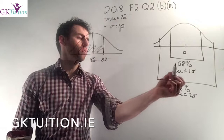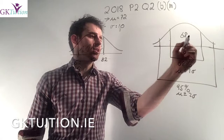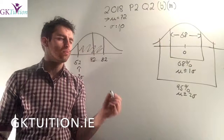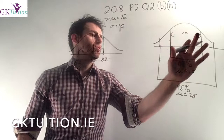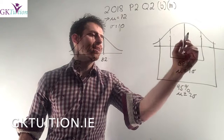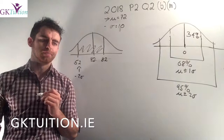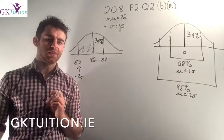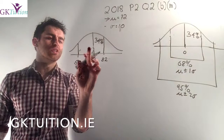According to the empirical rule, in any normal curve 68% of figures lie within one standard deviation of the mean — that is, between the mean minus one SD and the mean plus one SD. If I split that in half, 34% lie between the mean and the mean plus one standard deviation. So 34% of the class must have scored between 72 and 82.